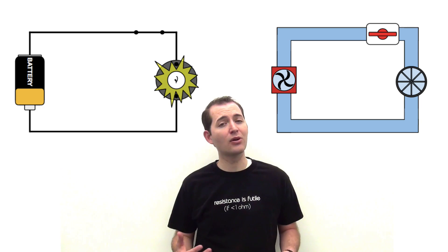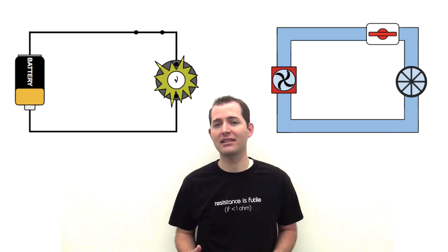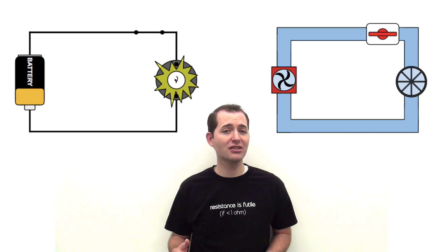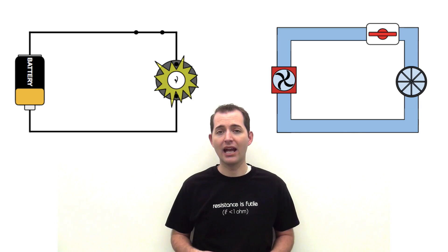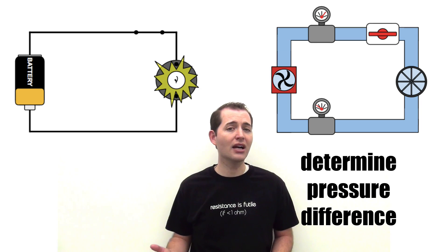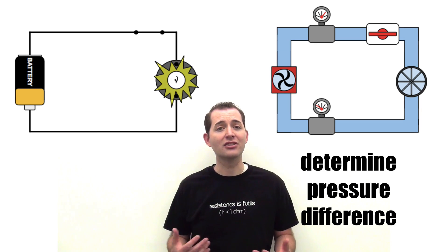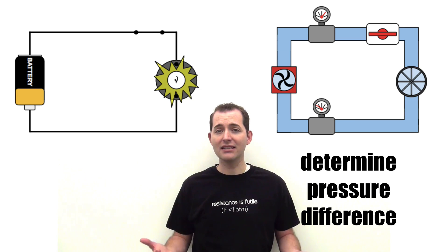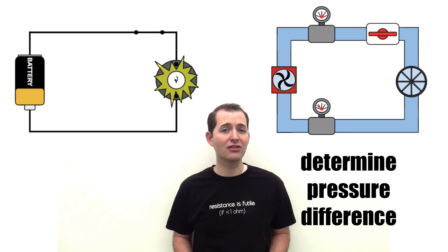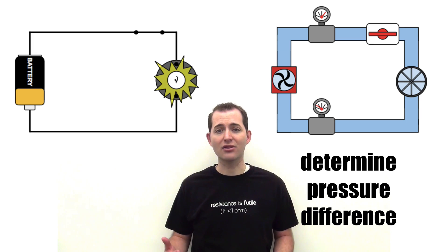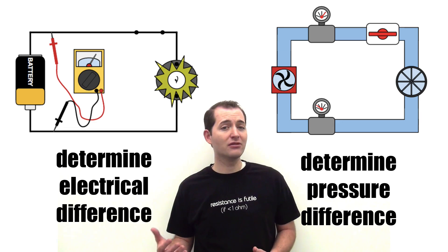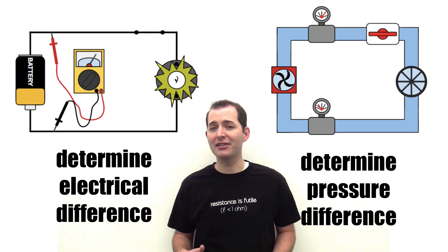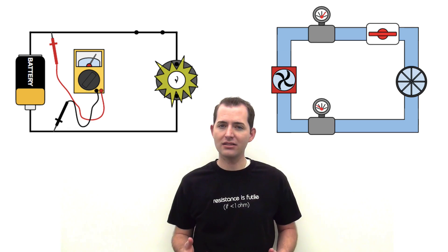In both types of systems, we can also use devices to give us more information about what is exactly happening in that system. The water pump creates a pressure difference in the pipes, and we can use two pressure gauges — one before and one after the pump — to determine this pressure difference. The same is true for our electrical circuit: a battery or generator creates a potential energy difference or voltage, and we can use a voltmeter to measure the potential difference before and after that battery or generator.